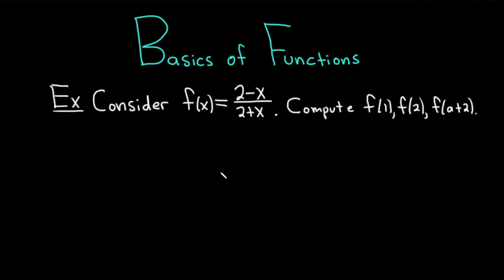Let's start with an example. So we have a function given by this formula: f of x equals 2 minus x all divided by 2 plus x. And the question is to compute f of 1, f of 2, and f of a plus 2. Let's carefully work through this solution.